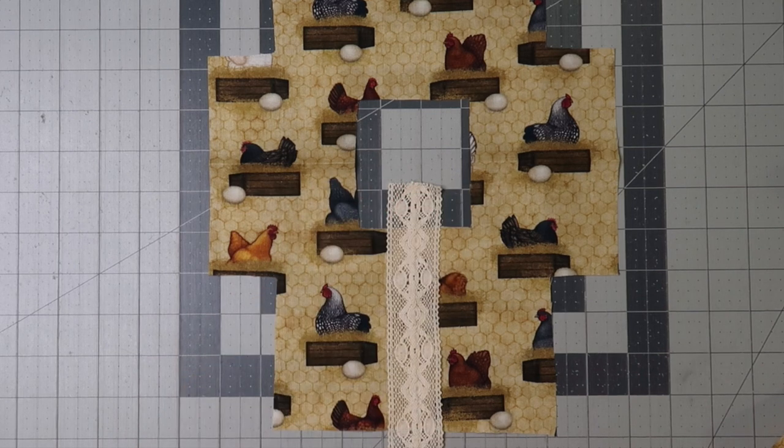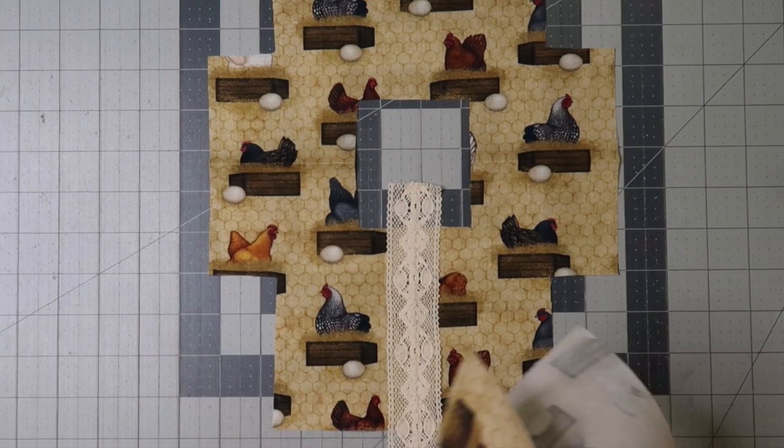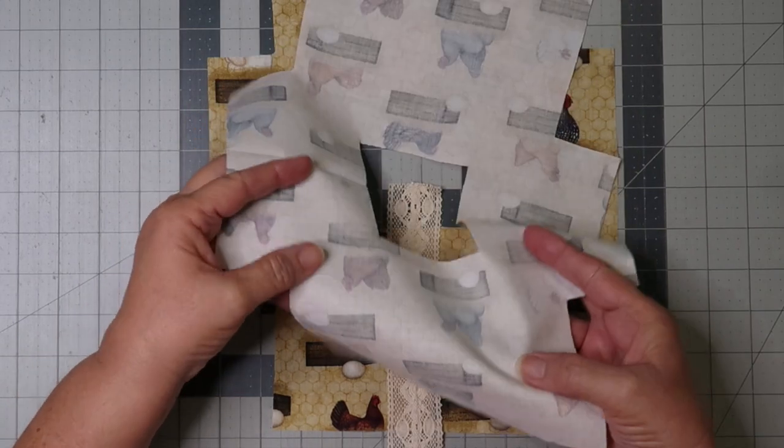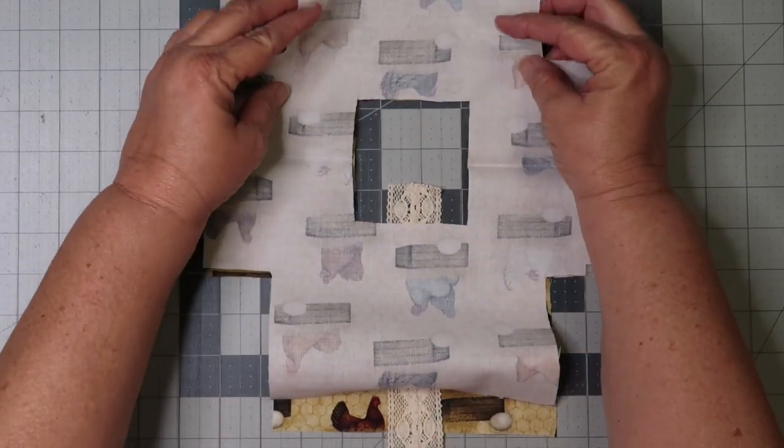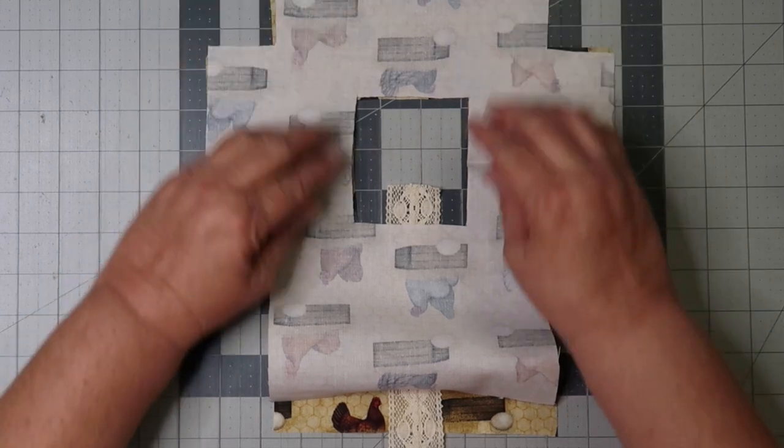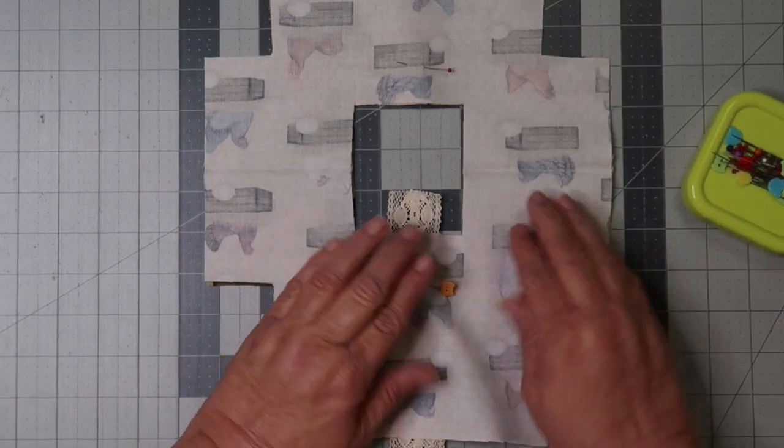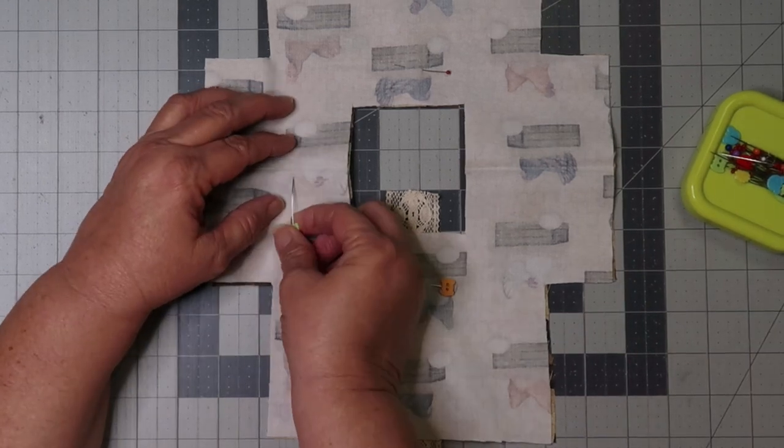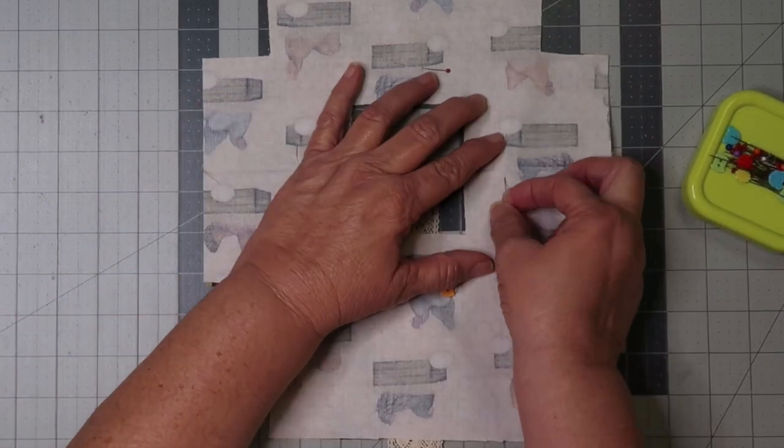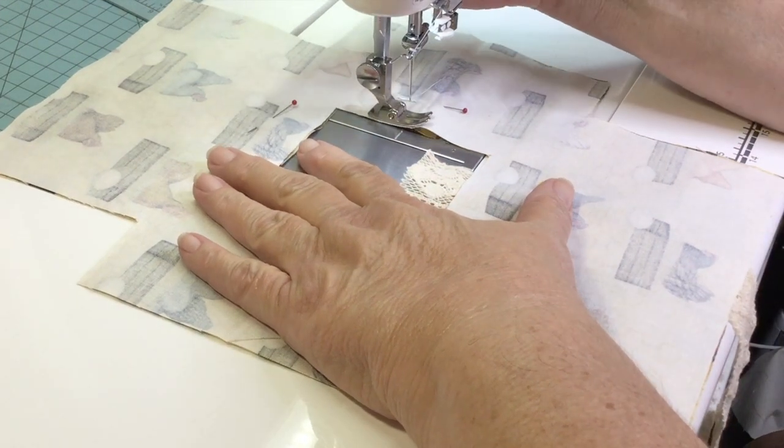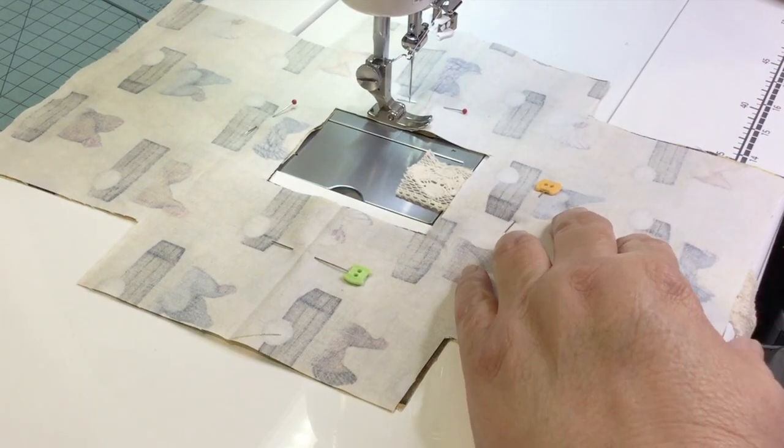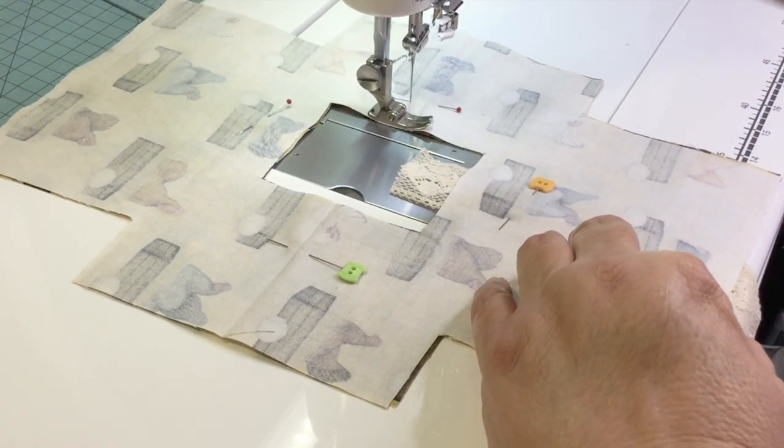Cut out your pattern piece and then place the trim in the center of the neckline. If your fabric is directional, be sure to put it on the correct side. Now pin around the neckline and then we're going to sew with a quarter of an inch seam allowance. Be sure to backstitch at the beginning and the end of your stitching.